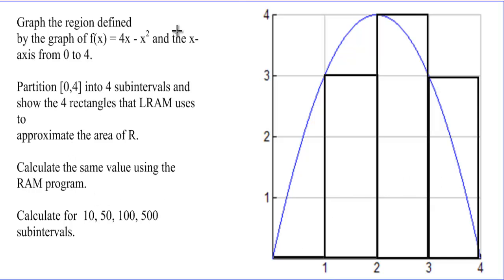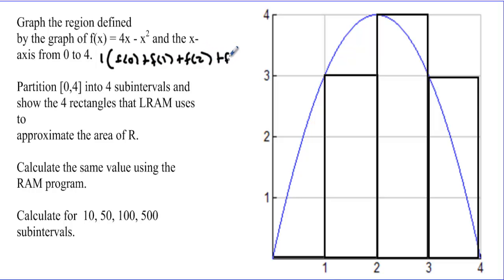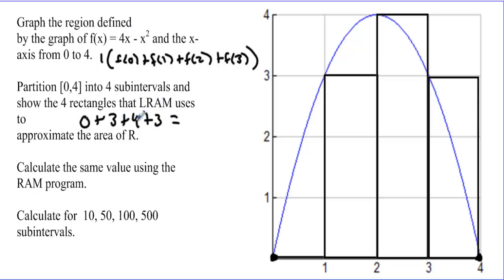We calculate the area by hand. Each base is one, so we need f(0) + f(1) + f(2) + f(3). Since we're using LRAM, zero is strictly a left endpoint and four is strictly a right endpoint, so we don't use four — we use zero, one, two, and three. Plugging in: f(0) = 0, f(1) = 4−1 = 3, f(2) = 8−4 = 4, f(3) = 12−9 = 3. The approximation is 10.